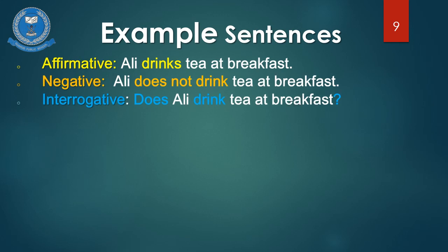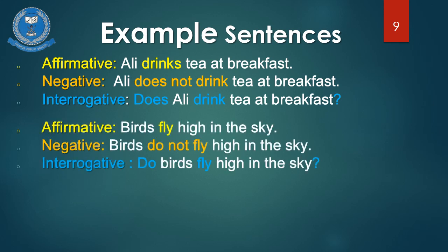Sentence number 2. Affirmative: Birds fly high in the sky. Since our subject is plural, we haven't added S or ES with our verb. Negative: Birds do not fly high in the sky. Interrogative: Do birds fly high in the sky? Here our subject is plural, so we have used 'do' as our helping verb for negative and interrogative.